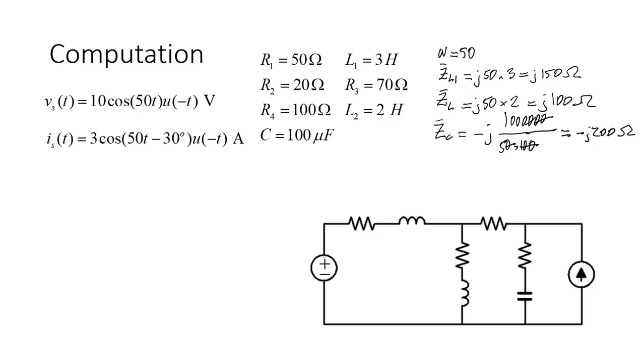Now we can write the values there. And so the first one, R1, is 50 ohms. I will not write ohms everywhere. And L1 is j150 ohms. And then R2 is 20 ohms. And R3, that is 70 ohms. And ZL2, oh I forgot the j here, is j100 ohms. And R4, 100 ohms. And ZC, -j200 ohms.